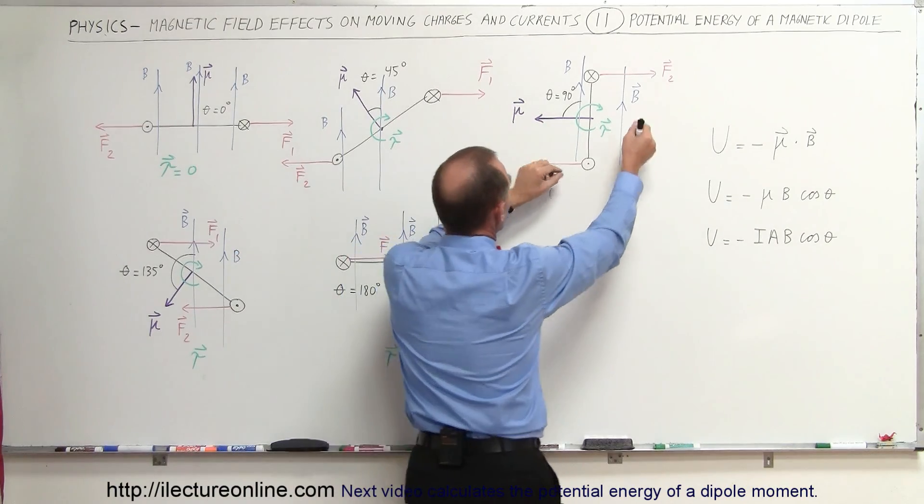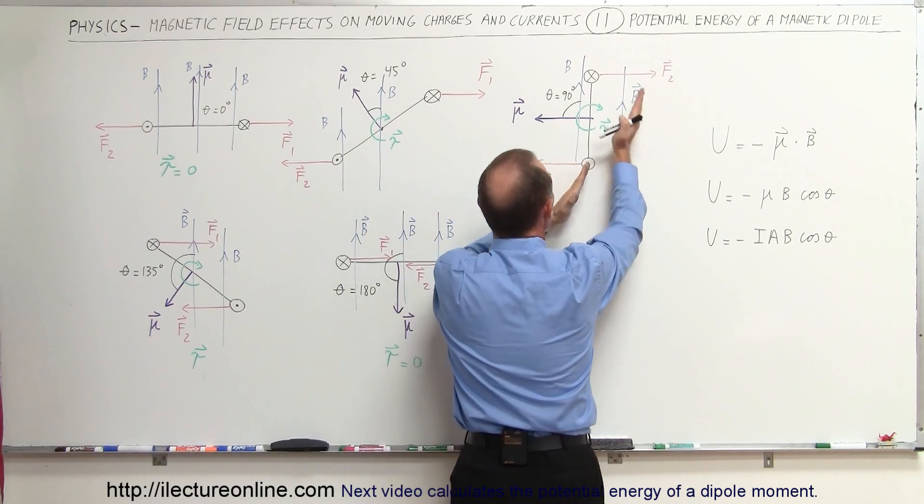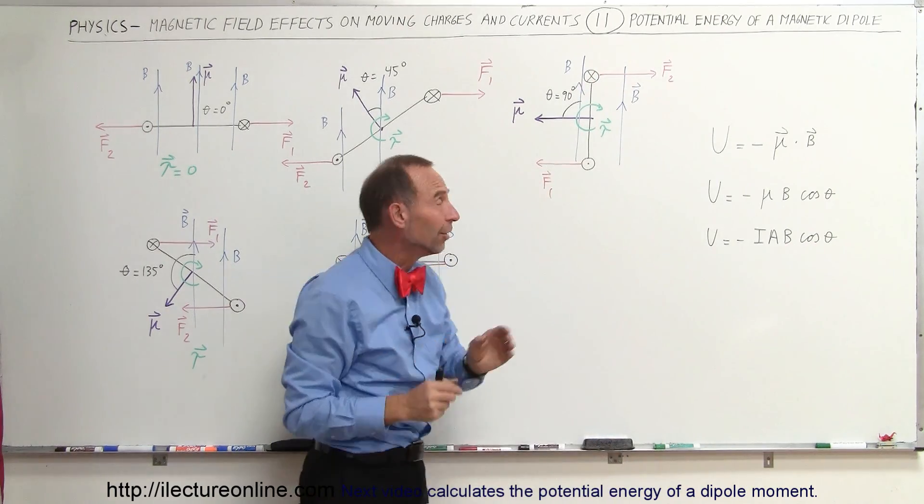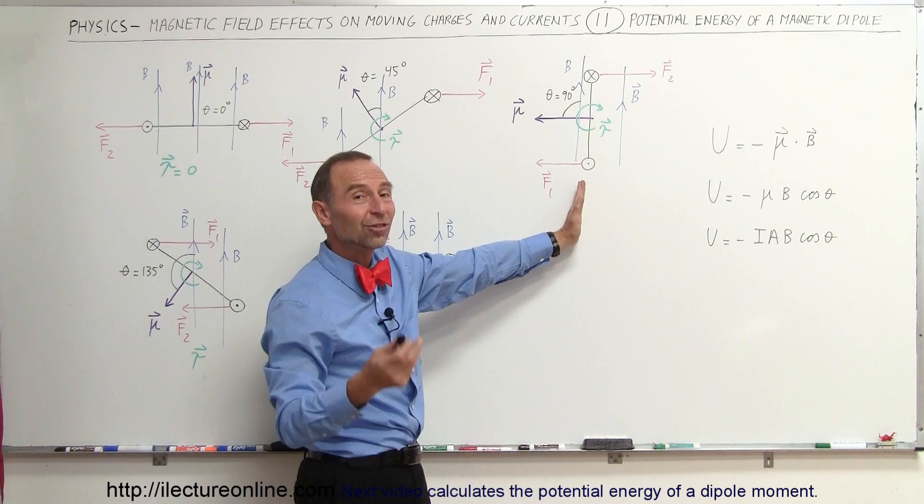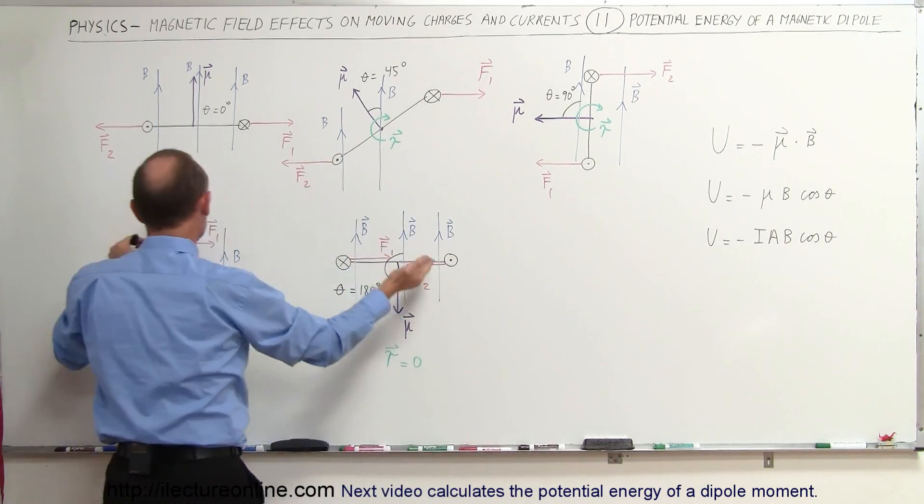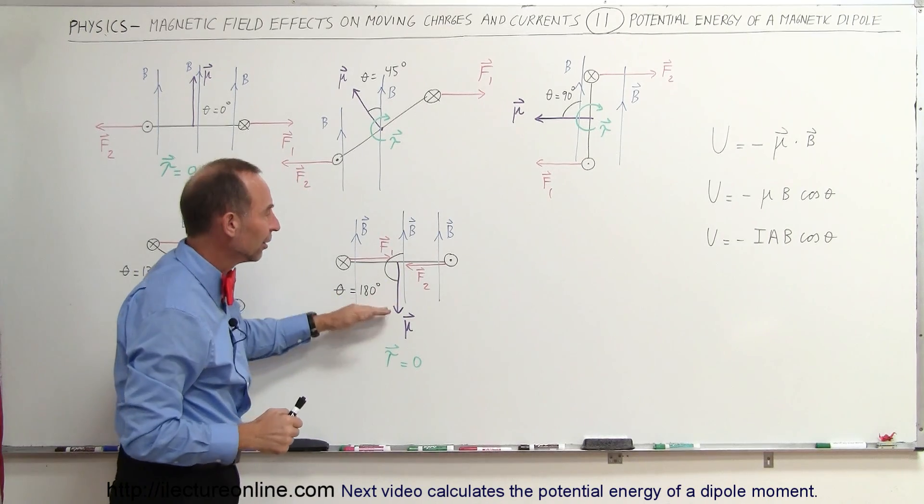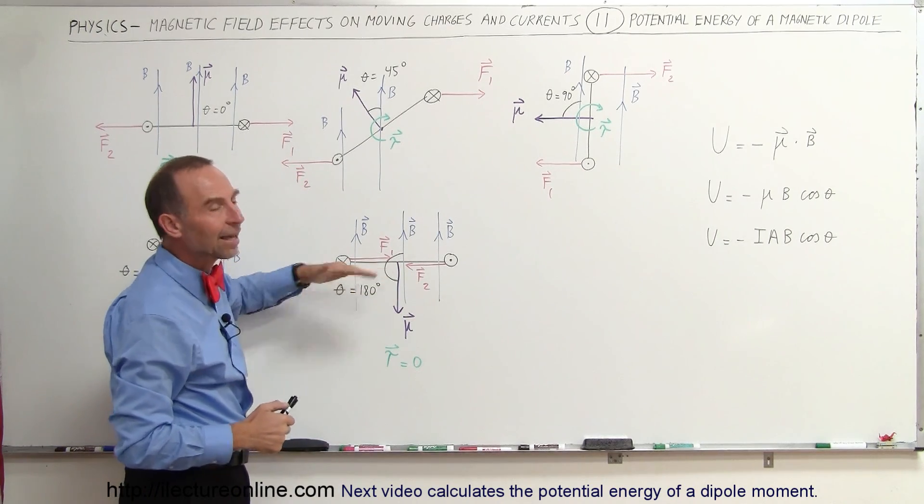Once we get to this point right here at the 90 degree angle, where we've already done quite a bit of work to get it there, now you can see that the cosine of 90 degrees is zero, so that means at this point the energy is zero. And then if we continue to turn the loop all the way upside down, now we reach the maximum potential energy value of the positive IAB.